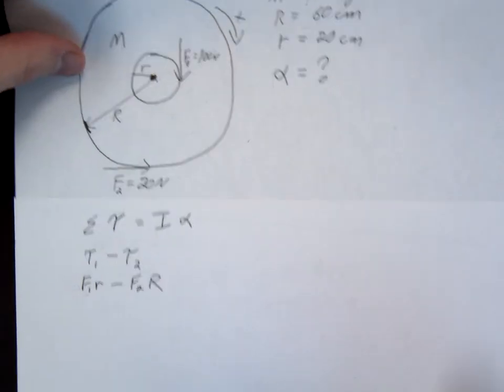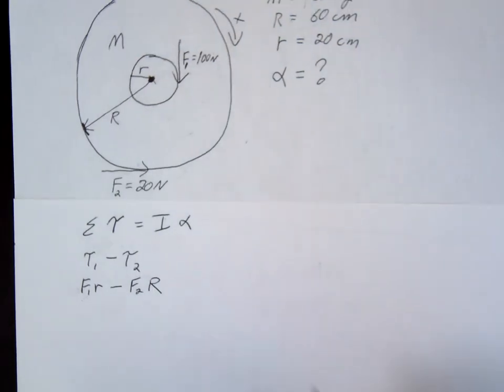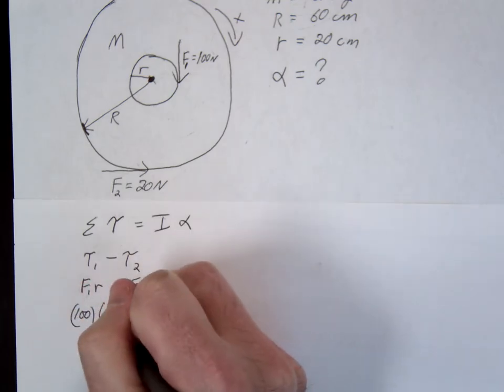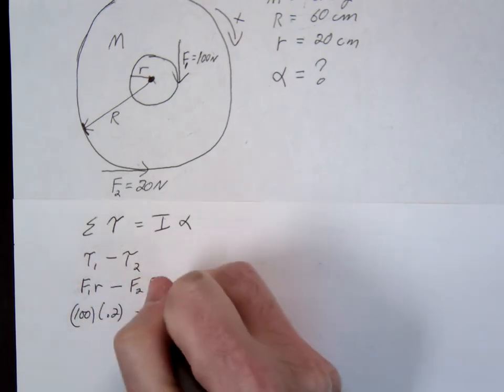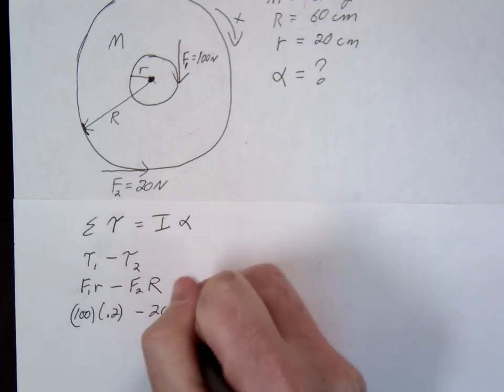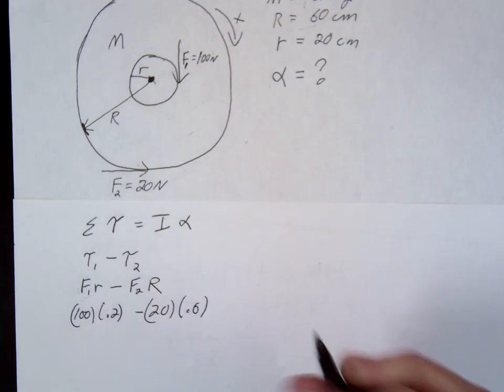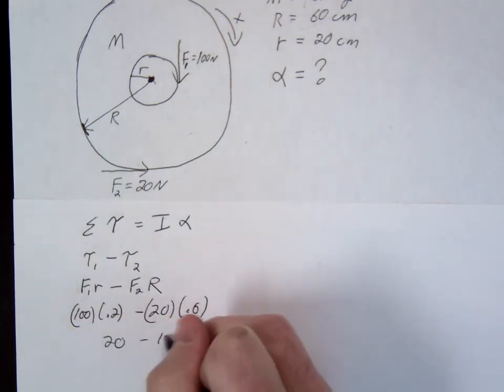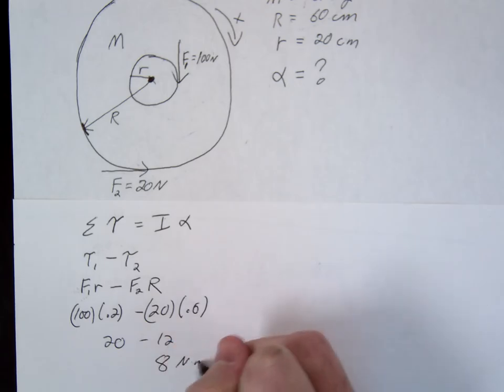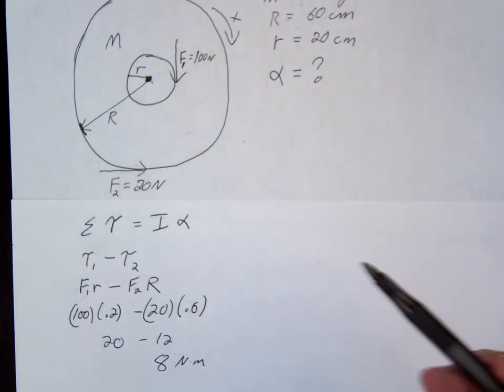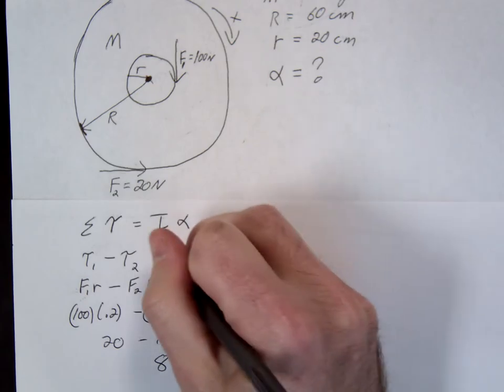Let's sum up those torques. F1 was 100, little r was 0.2, F2 was 20, and big R was 0.6. So it's 20 minus 12 or 8. If the question asks for the net torque, the answer would be 8 in the clockwise direction.